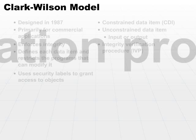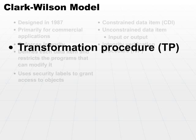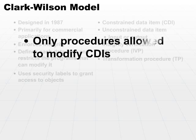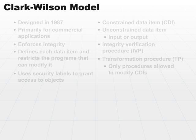It's actually the transformation procedure that modifies the CDIs. It's the only procedure allowed to touch or to write constrained data items. Through a very small set of transformation procedures, we can restrict which procedures can touch the CDIs — the constrained data items — and thereby maintain the integrity of the data.